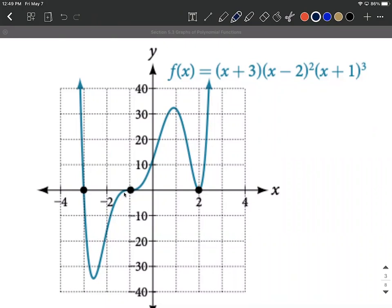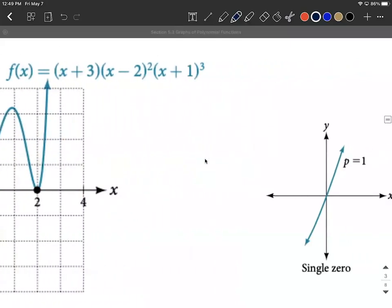The higher the multiplicity, the closer it kind of hugs in close and almost crosses more horizontally at the x-axis with a higher multiplicity. Multiplicity of 2, you'll notice this touches and comes back the same direction.